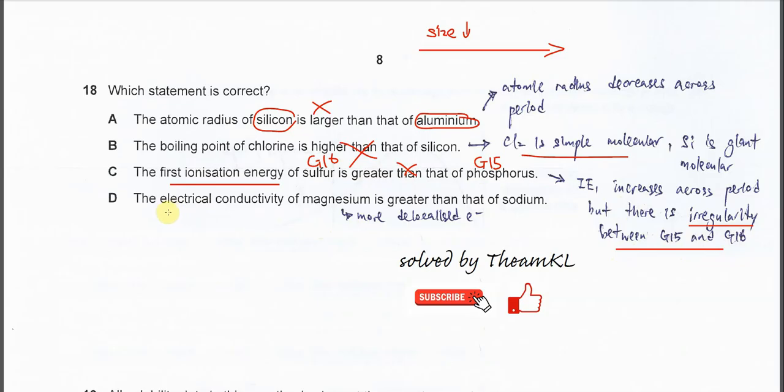For D, the electrical conductivity of magnesium is greater than sodium. Yes, because magnesium is group 2, it has more valence electrons. It will contribute more electrons to the sea of delocalized electrons. Therefore, the electrical conductivity of magnesium is greater than sodium.